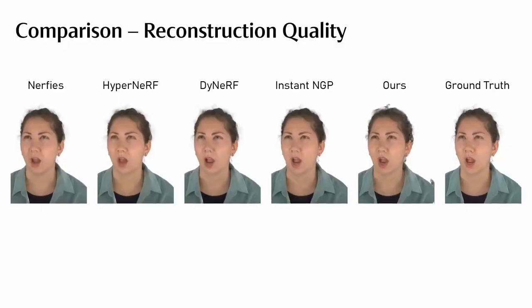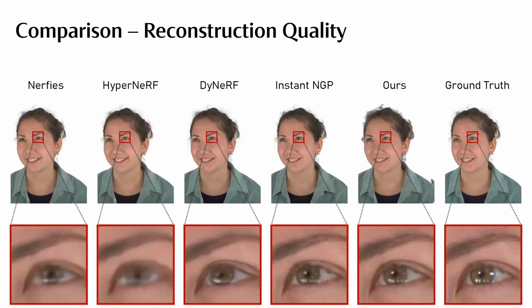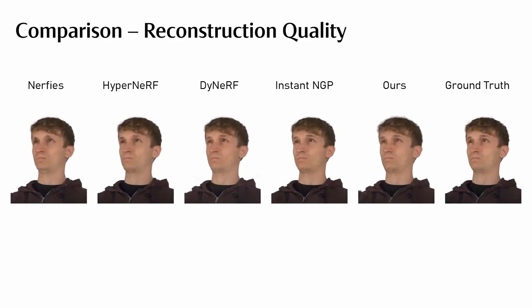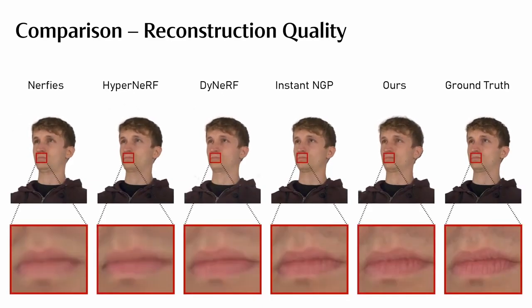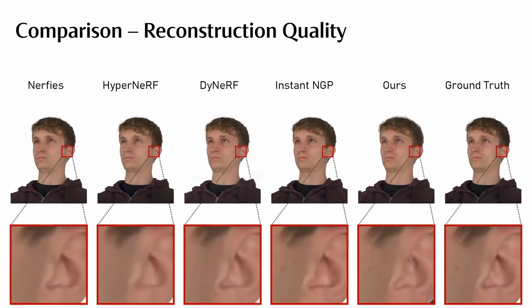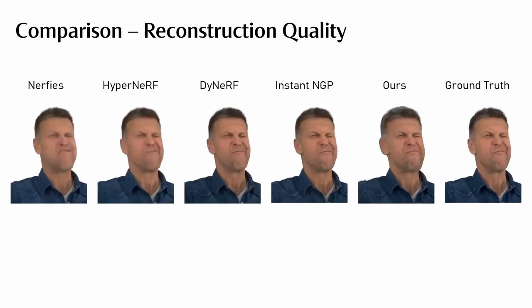We proceed to compare our method against state-of-the-art baselines on a held-out camera view. Our method is able to produce compelling, temporally consistent re-renderings and captures the most detail. In the following, we show more results on different subjects. We consistently reconstruct more detail in various parts of the scene. Even on a very challenging sequence with extreme expressions, our method can still faithfully capture the complex motion.